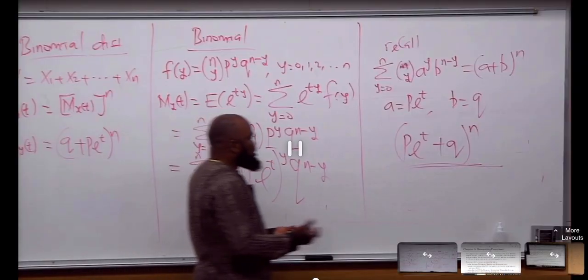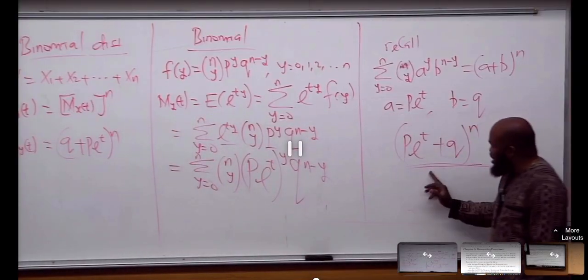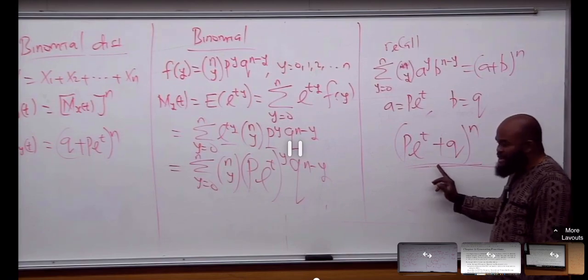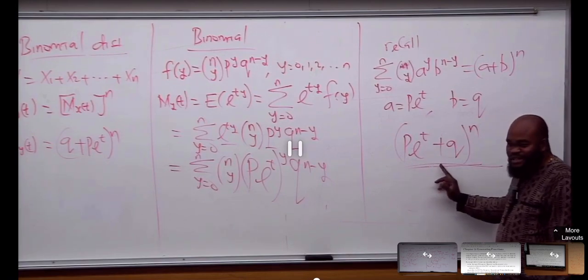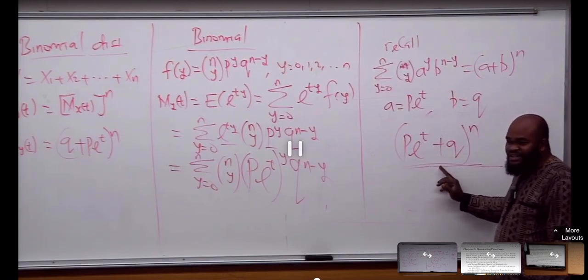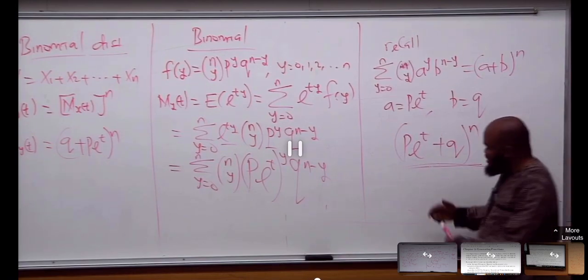Mean and variance — for instance, you have a distribution, you have this as a moment generating function now. Find the expected value of Y.